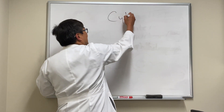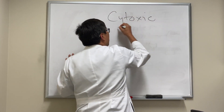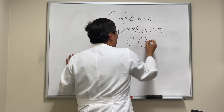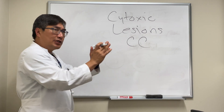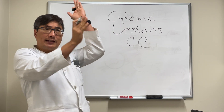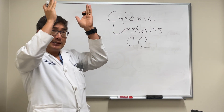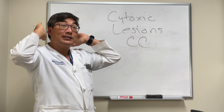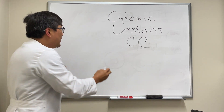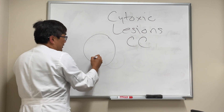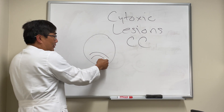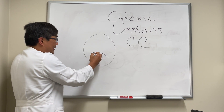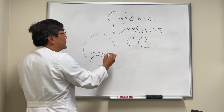Someone asked about cytotoxic lesions of the corpus callosum. As you know, the corpus callosum is this huge connecting band that connects the two hemispheres. It has a rostrum, a body, a genu — the bending part — and the splenium. When we're looking at imaging studies, the corpus callosum connects the two occipital lobes, and this is the splenium of the corpus callosum.